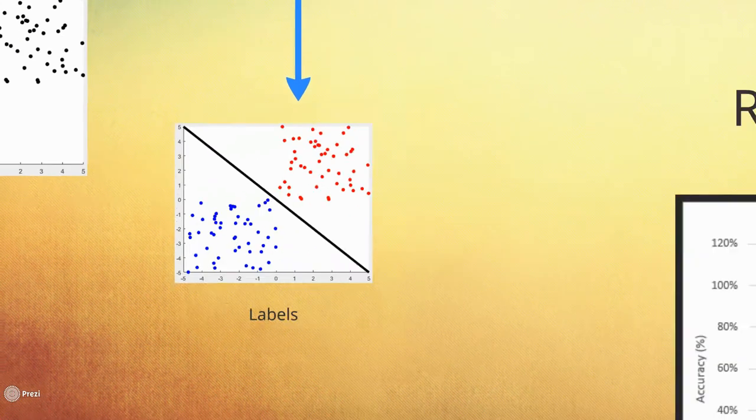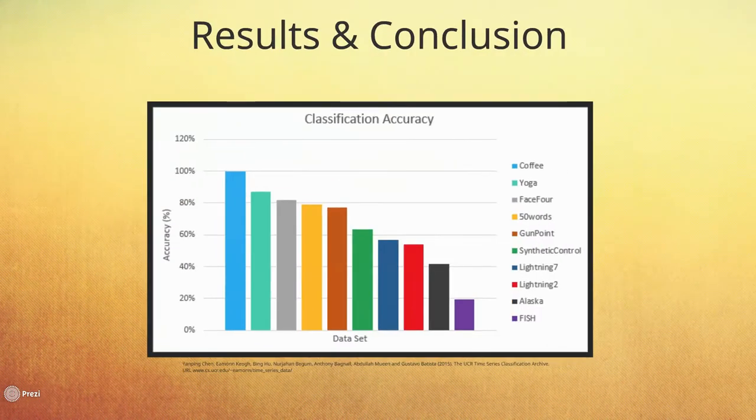We applied the wavelet scattering transform with the k-nearest neighbors classifier to several UCR time series data sets and obtained the following accuracies. Our experiment showed that the wavelet scattering transform is a promising feature extractor for time series classification, but more testing is required to confirm its viability.